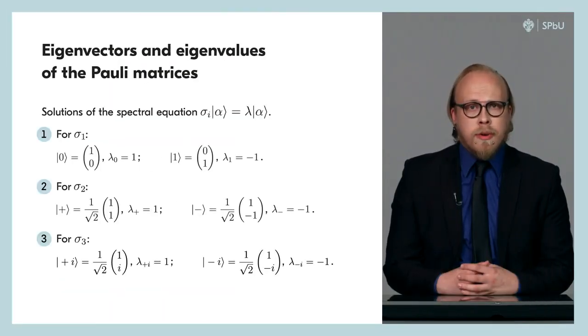In the next slide, we see the solutions of the spectral equation for the Pauli matrices, that is, their eigenvectors and eigenvalues. Note that the eigenvectors of the Pauli matrix σ₃ are often called the standard or computational basis. The basis of the measuring device, as for example the Stern-Gerlach device, is often associated with these eigenvectors. We will also often use the eigenvectors of the Pauli matrix σ₁, which is also called the Hadamard basis.